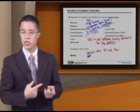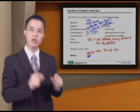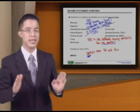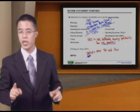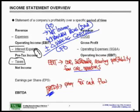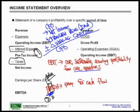Going back to our EBITDA definition: the first item is working capital as just mentioned. However, net income has already been reduced by interest expense and taxes, whereas EBITDA is specifically before interest and taxes. So the interest expense and taxes — the I and T in EBITDA — represent the second and third reasons why CFO and EBITDA differ.